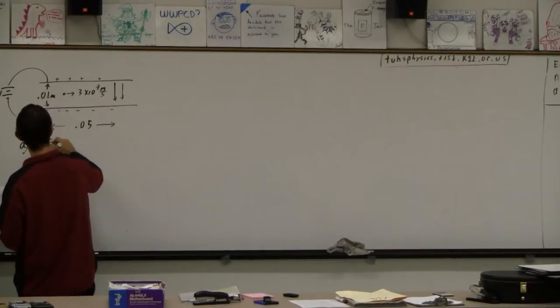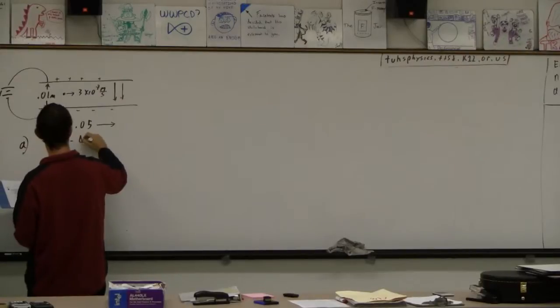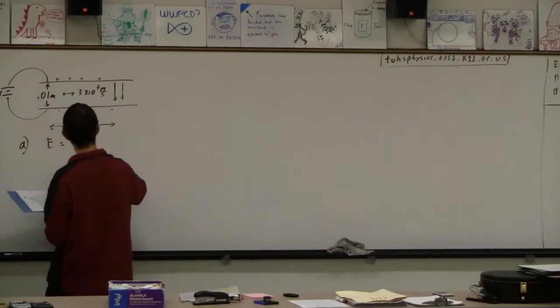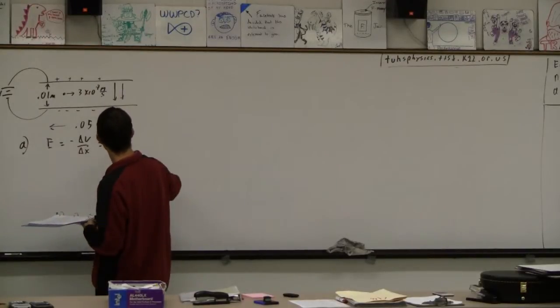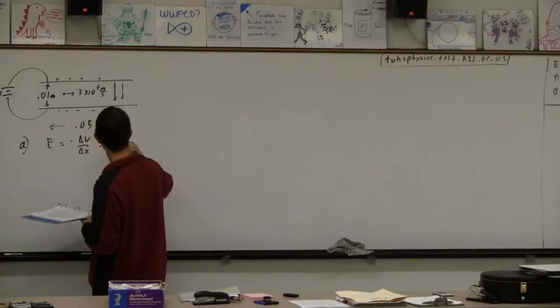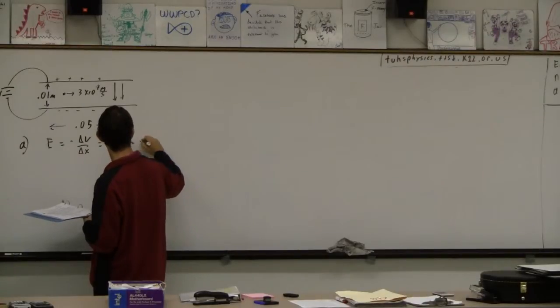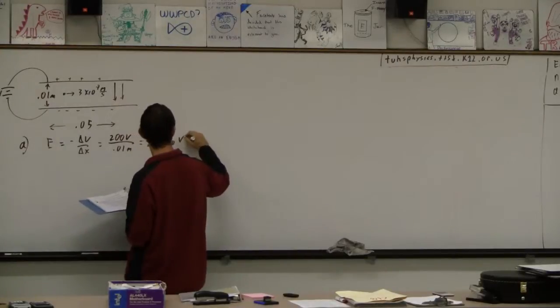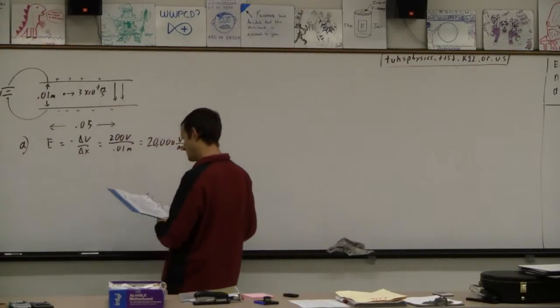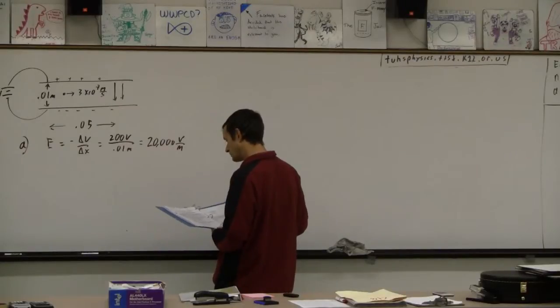I'm going to use E equals negative delta V over delta X. This is a minus sign that I generally disregard because I know the direction of it. So it's 200 volts divided by 0.01 meters, and that's going to be 20,000 volts per meter. That is our answer, two times ten to the fourth volts per meter.